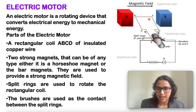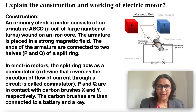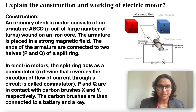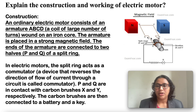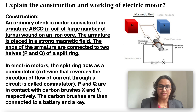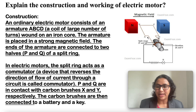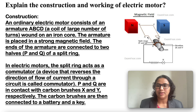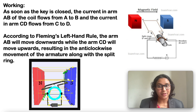Current in the coil ABCD enters from the source battery through the conducting brush X and flows back to the battery through brush Y. Notice that the current in arm AB flows from A to B, and in arm CD it flows from C to D. An electric motor consists of an armature ABCD — usually a large number of turns wound on an iron core — placed in a strong magnetic field. The ends of the armature are connected to two halves P and Q of a split ring, which acts as a commutator. A commutator is a device that reverses the direction of flow of current through a circuit. P and Q are in contact with carbon brushes X and Y respectively, which are connected to the battery.